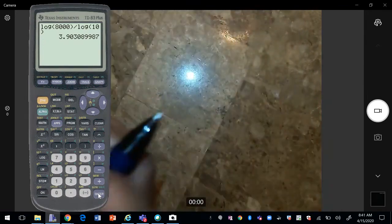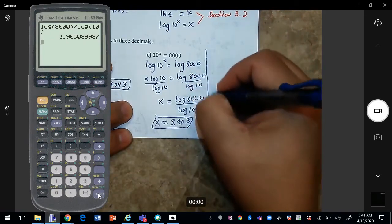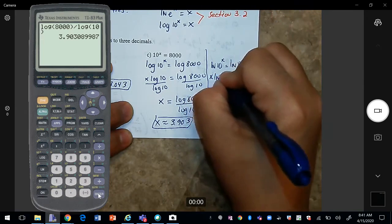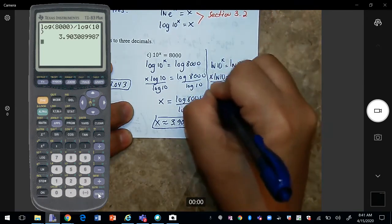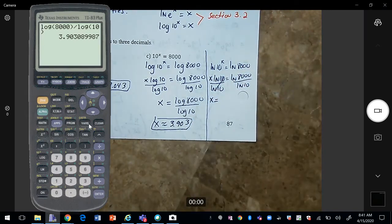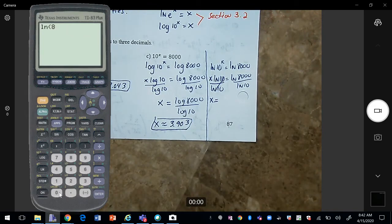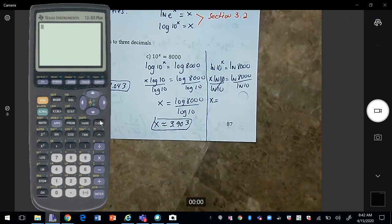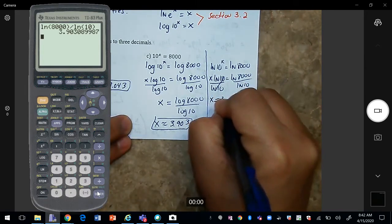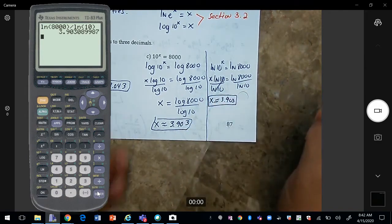And if you use natural log, you would still get the same answer. Natural log of 10^x is equal to natural log of 8000. Bring the x to the front, divide by natural log of 10. Put it in the calculator. And so we get the same answer. So you can use natural log or logarithm, whichever log you prefer.